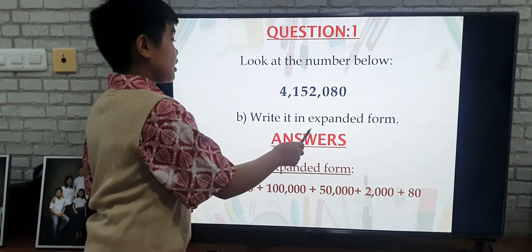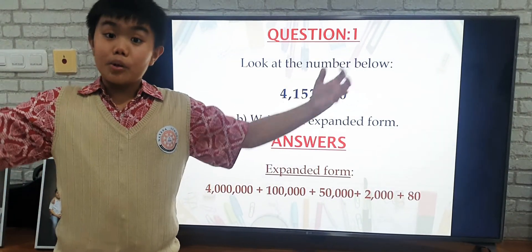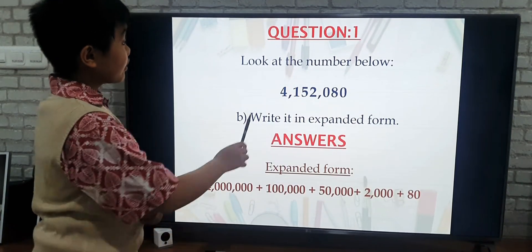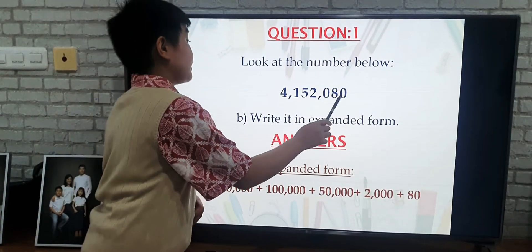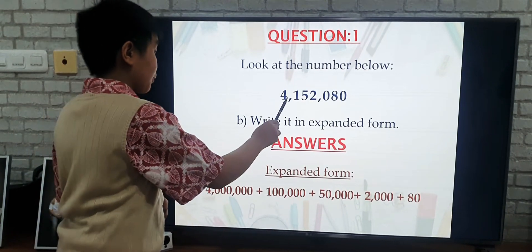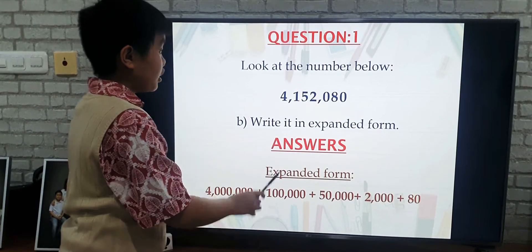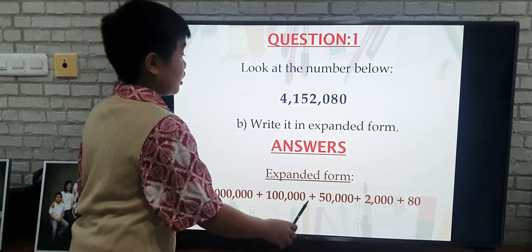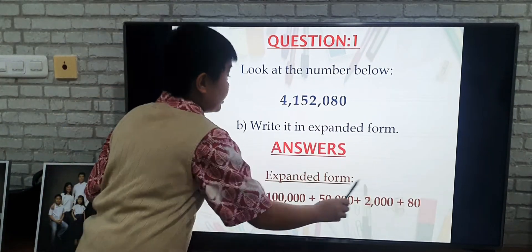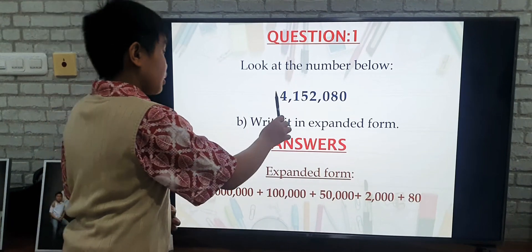Write it in expanded form. Expanded form is when we expand the number according to its place value. So if we write this number in expanded form, it will be like this: 4 for 4,000,000; 1 for 100,000; 5 for 50,000; 2 for 2,000; and 8 for 80. This is the expanded form of this number.